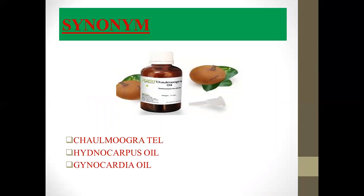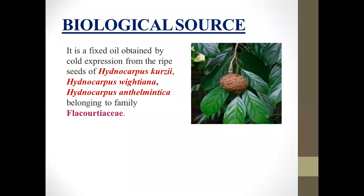The synonyms of Chaulmoogra oil are: Hydnocarpus oil, Kinocardia oil, and Chaulmoogra tail. It is a fixed oil obtained by cold expression from the ripe seeds of Hydnocarpus.